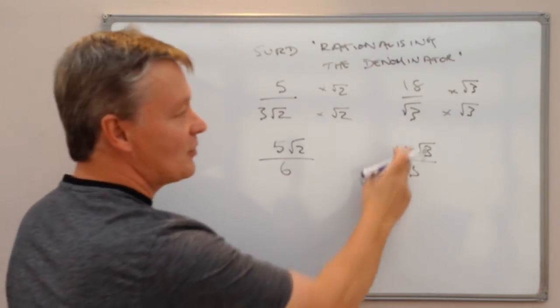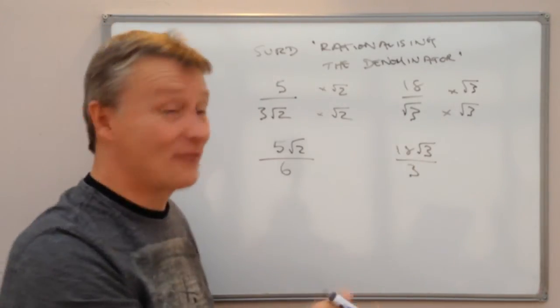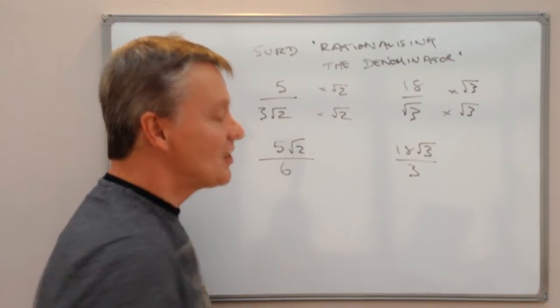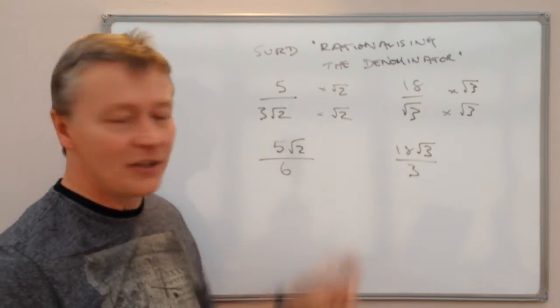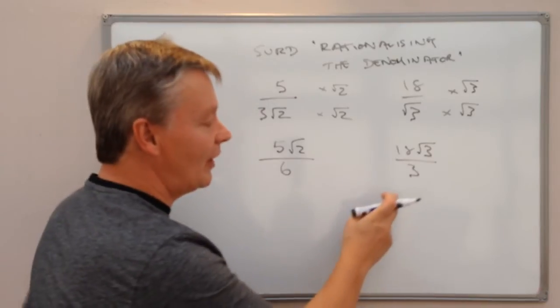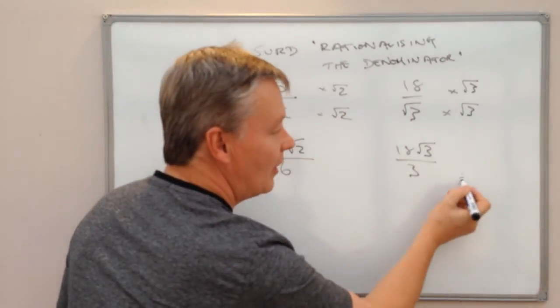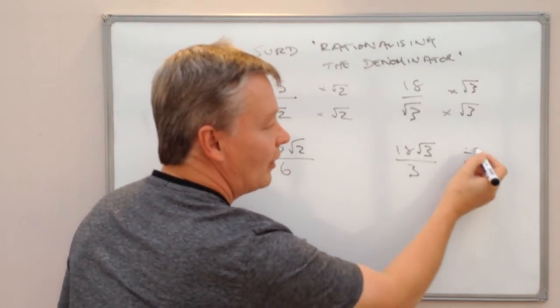Okay, so 3 times 3 is 3 or root 3 times root 3 is 3. So the other thing I can do now is just simplify that a little bit further and I can divide the top and bottom by the whole number 3. So what I've got now is 3 divided by 3 makes just 1 on its own.